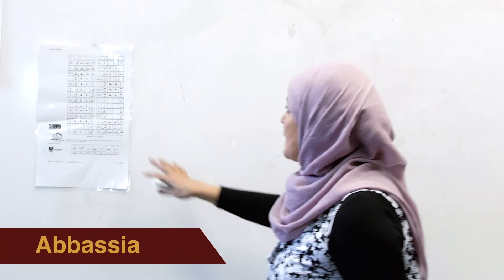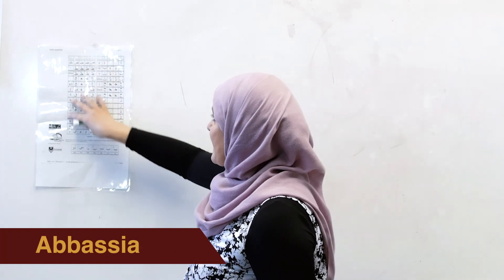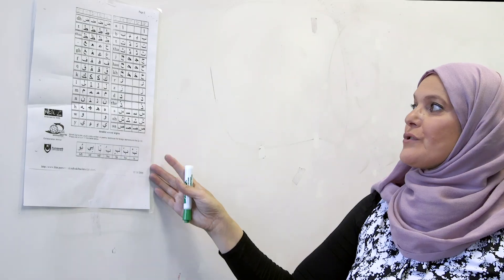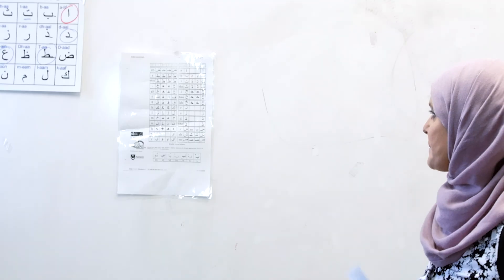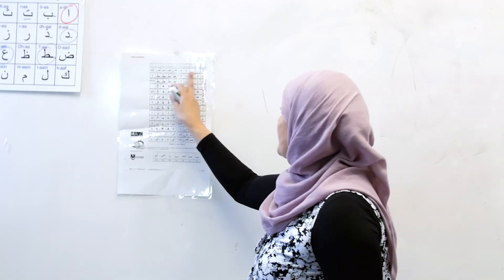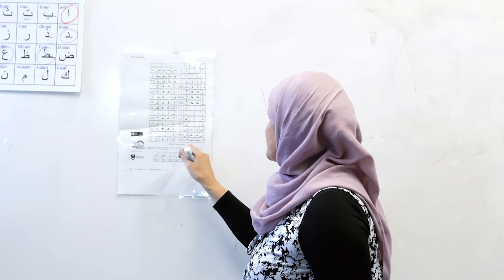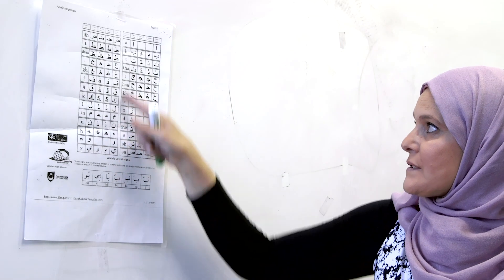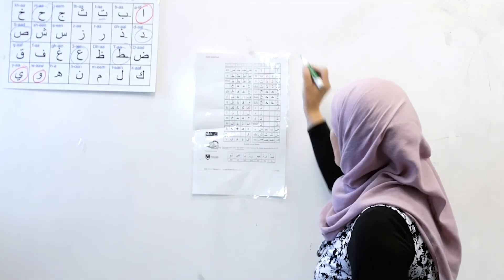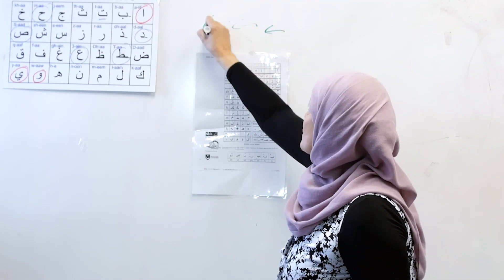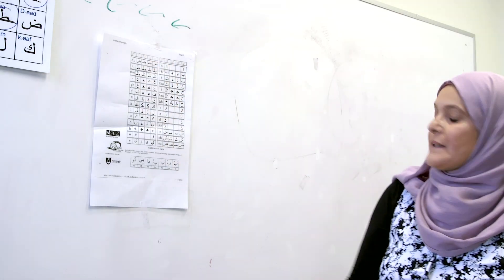The student needs something like that to show them the connection, the shape. Like if you see the elif, and the ra, and the za, and all these letters. And again, we are going this way, right to left.